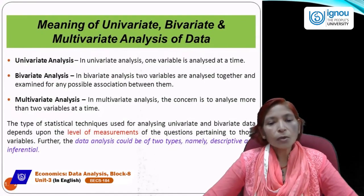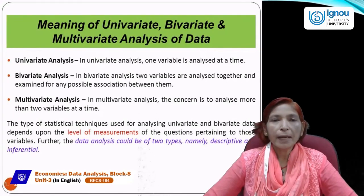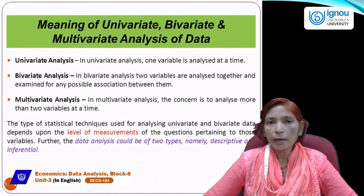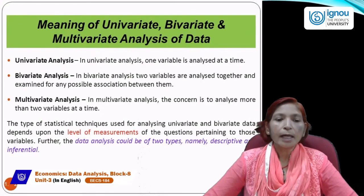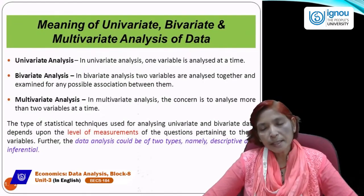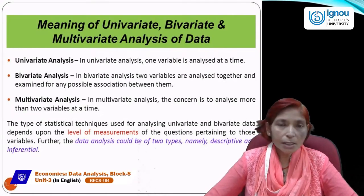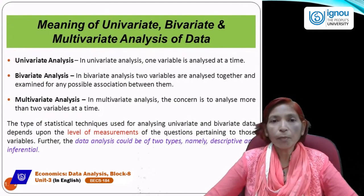The type of statistical techniques used for analyzing univariate and bivariate data depends upon the level of measurement. There are four levels: nominal, ordinal, interval, and ratio. Further, data analysis could be of two types — descriptive and inferential. These two are the main branches of statistics, and both are very important when studying data analysis.